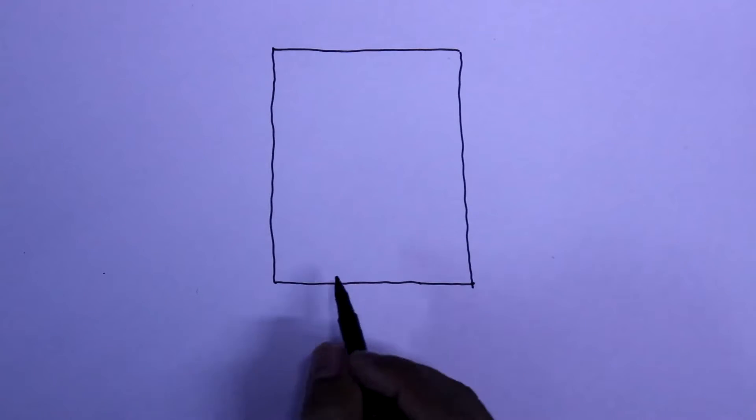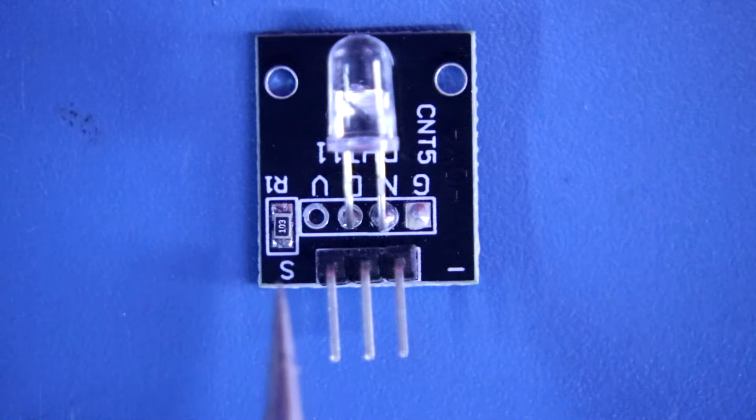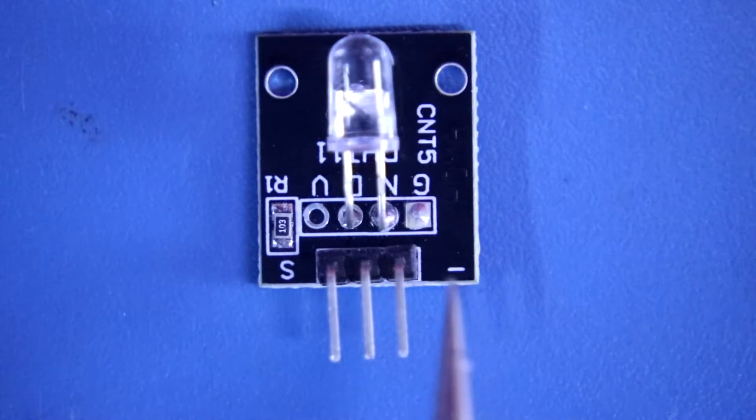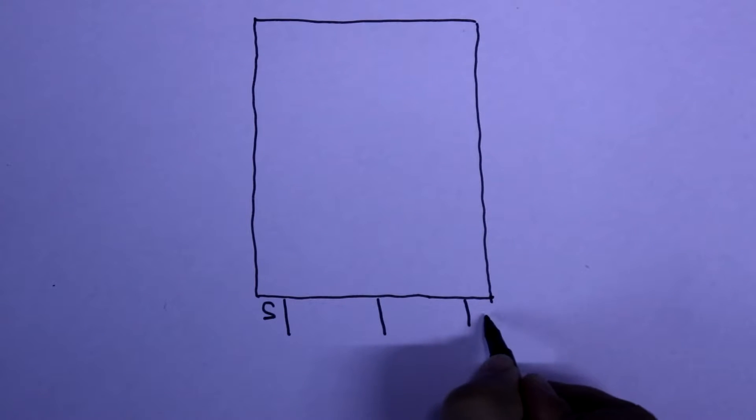This is the module. It has three pins. This is the first pin and it is written as S. This is the middle pin and the third pin is negative pin. This is S and it is negative.